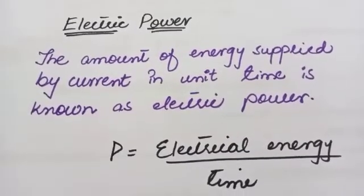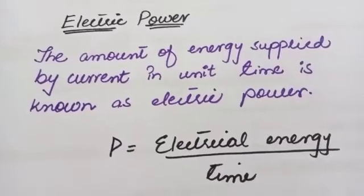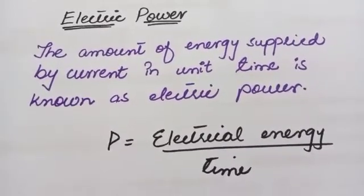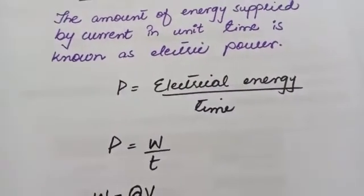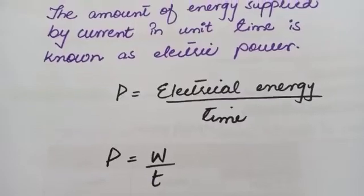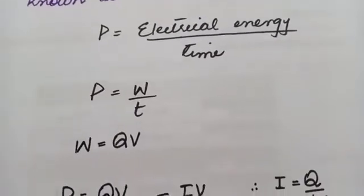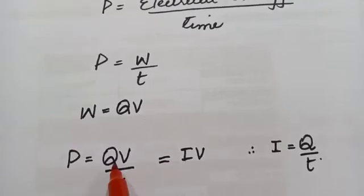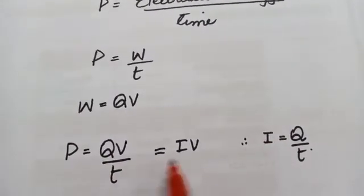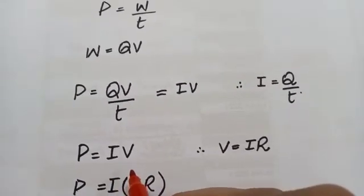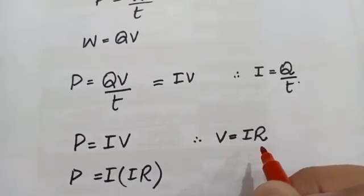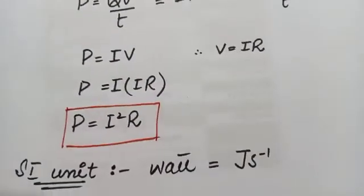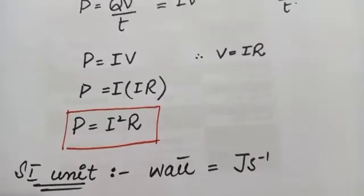For electrical power, the amount of energy supplied by current in unit time is known as electric power. Power can be determined by the formula P = electrical energy / time. Since electrical energy W = QV, we get P = QV/t. Since Q/t = I, this gives P = IV. By Ohm's law V = IR, we can substitute to get P = I²R. The SI unit for electric power is the watt, equal to joule per second.